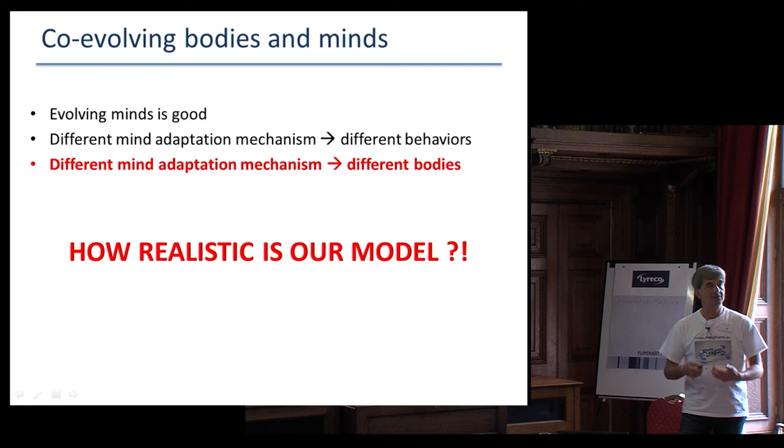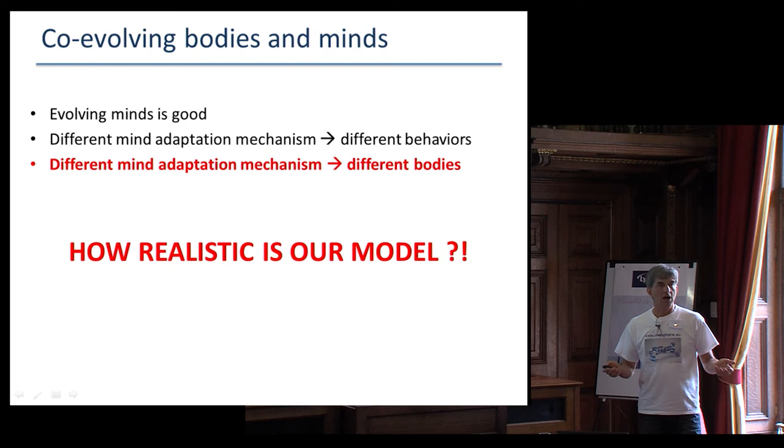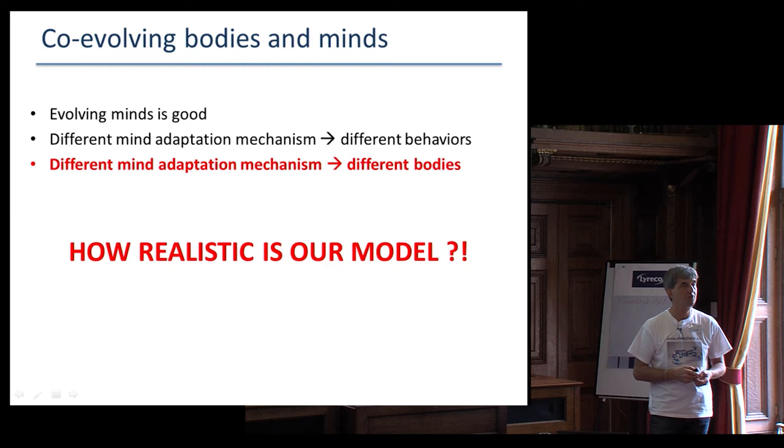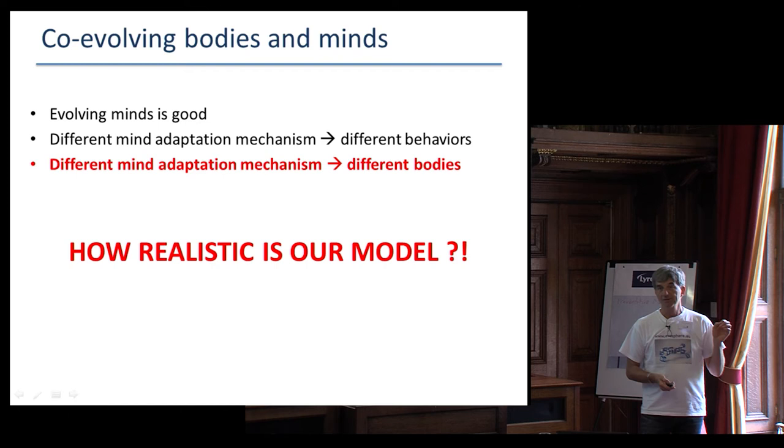But the most interesting thing is this. In the body space, which had two parameters, these two systems converge to completely different segments. So this is the plot of the population under evolution plus evolution. And this is the plot of the evolution learning. The amazing thing is that the operators for the body were the same. So the different way of adapting minds implied different bodies. So this was something very interesting and it asked for more research which we didn't really do back then. But this raises the question, how realistic is this?